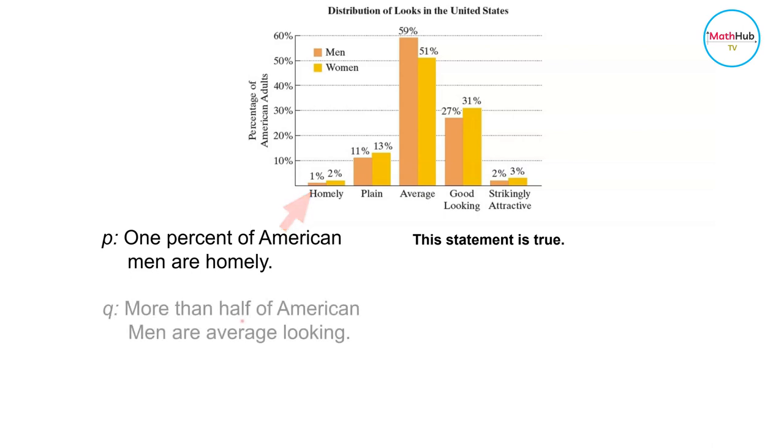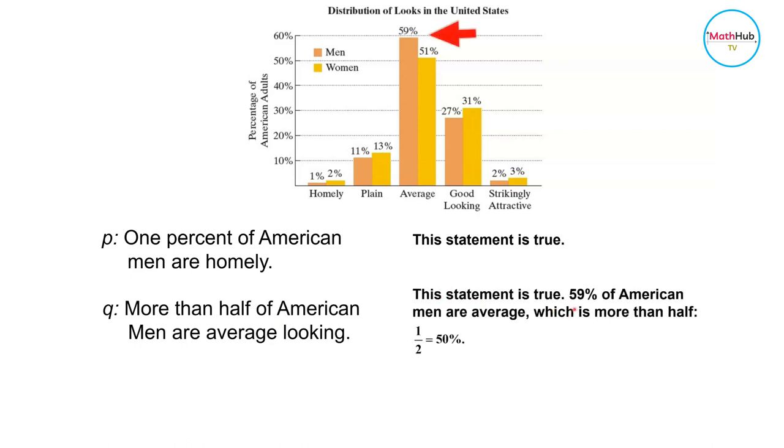Q represents more than half of American men are average looking. This statement is also true because 59% of American men are average, which is more than half since one half is 50%.